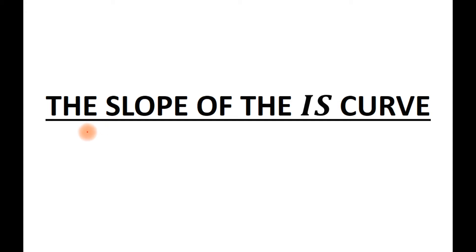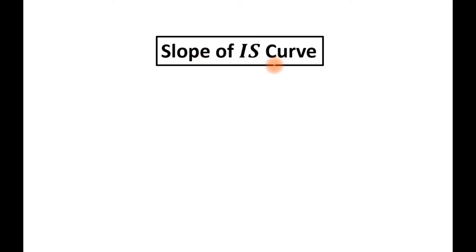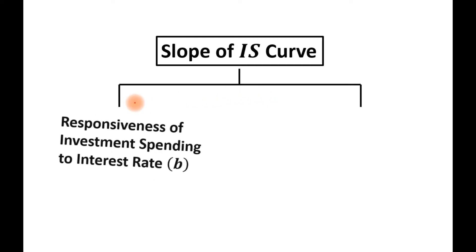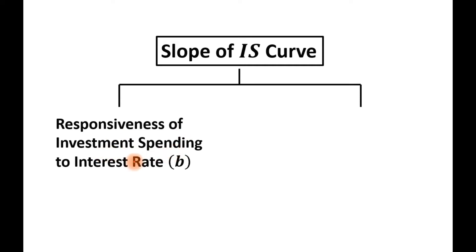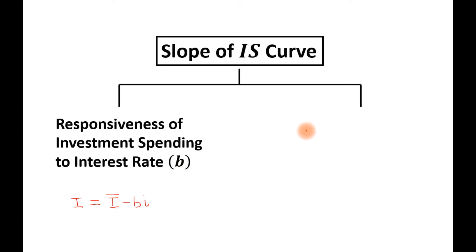Today's topic is the slope of the IS curve. The slope of the IS curve depends upon two factors. The first factor is responsiveness of investment spending to interest rate, denoted by B. We wrote the investment function as I equals I-bar minus bI, so this term B represents responsiveness of investment spending to interest rate. The second factor is the multiplier, denoted by alpha G.